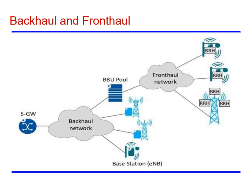In this diagram, we can have an idea of backhaul and fronthaul. The connectivity between SGW and the BBU pool can be considered as the backhaul network, and then we have the connectivity from the BBU pool up to the RRH, which can be considered as the fronthaul network.